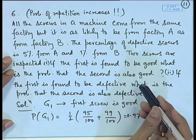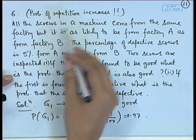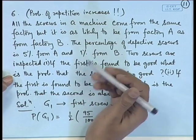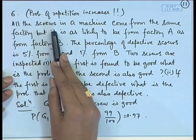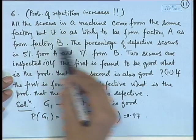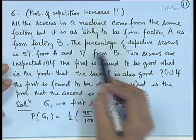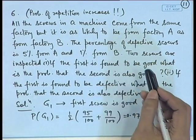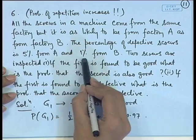We consider further applications of conditional probability and show an interesting phenomenon: the probability of repetition of a certain event increases. A machine has screws fitted; all the screws come from the same factory, but it is equally likely to be from factory A or factory B — probability half each. The percentage of defective screws is 5% from factory A and 1% from factory B.